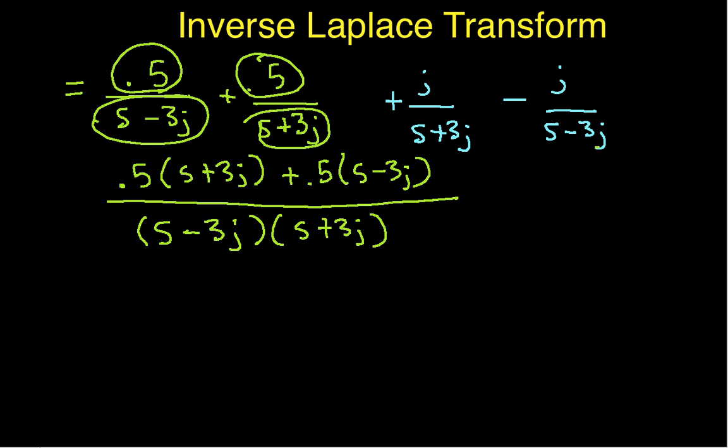So 0.5 times S, this guy times this guy, plus this guy times this guy, is going to give us 2 times 0.5 times S, which is just S. This guy times this guy gives us 1.5J. This guy times this guy gives us minus 1.5J. Those ones cancel, which is pretty cool. In the denominator we have S times S, so that's going to give us an S squared.